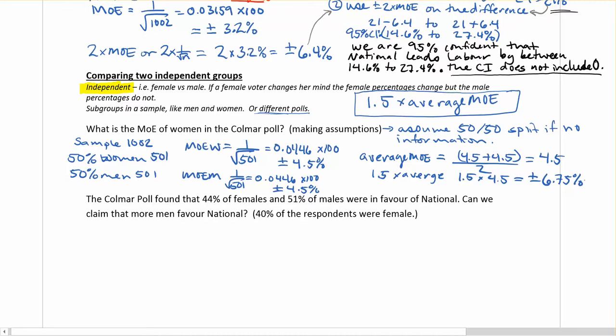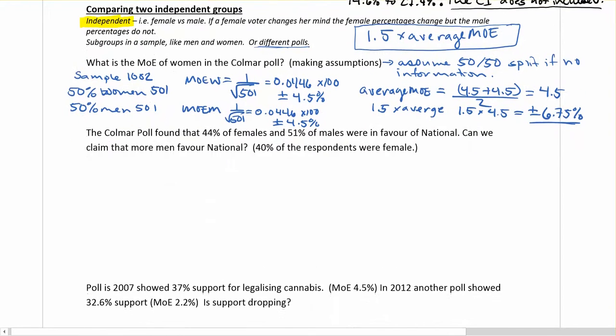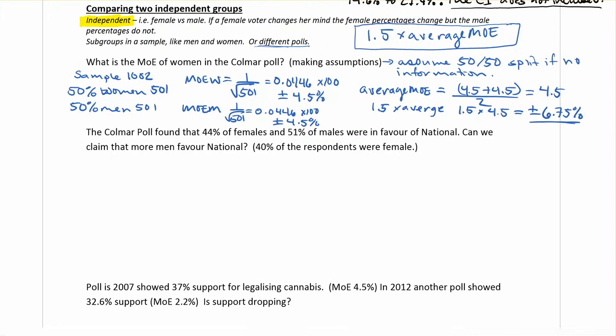So if we had equal numbers of men and women, our average MOE would be 4.5, and when we use our difference to calculate this, to find the difference between them, we would use the 1.5 times that, which is 6.75. So let's look at another example that kind of builds on this, which is more common to what you'll see, where we actually have different percentages.